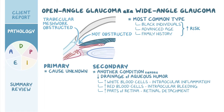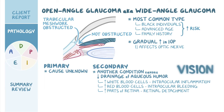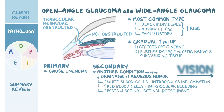Whatever the cause, all clients present with a gradual increase in intraocular pressure. Initially, increased intraocular pressure affects the optic nerve to some extent, decreasing only the client's peripheral vision at first. But chronic elevated intraocular pressure will result in further damage to the optic nerve and surrounding tissue, eventually causing loss of central vision as well. The final stage of injury is complete, irreversible blindness.